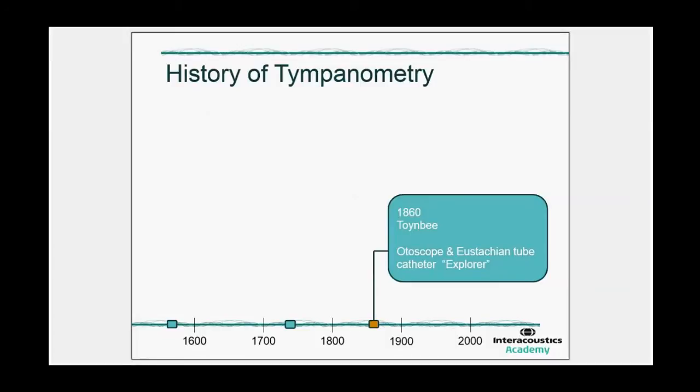And then between 1700 and 1800, there was a doctor who named the Eustachian tube after this first doctor. We jump all the way to 1860 to see that Toynbee is the first one to make an instrument for investigating something with regards to the middle ear, which was the otoscope and also a Eustachian tube catheter, which he called the Explorer.